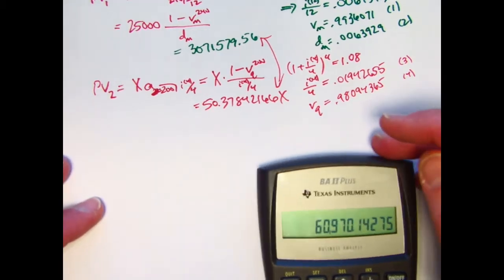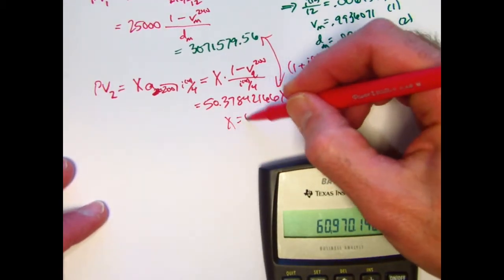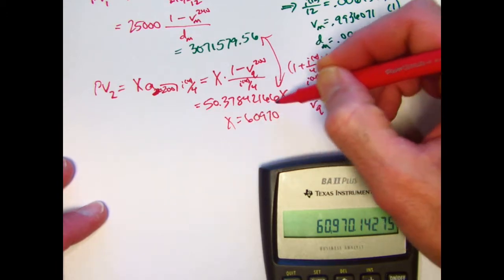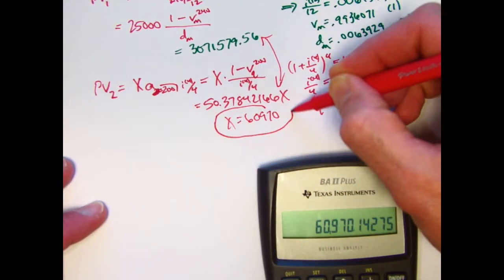So I'll take the reciprocal of this and multiply times 3071579.56. The answer to the nearest whole number, say, is x equals 6970. That's our quarterly payment, and that is the correct answer.